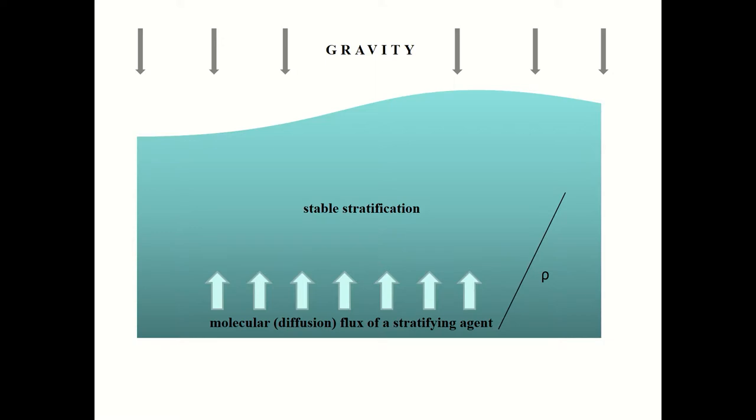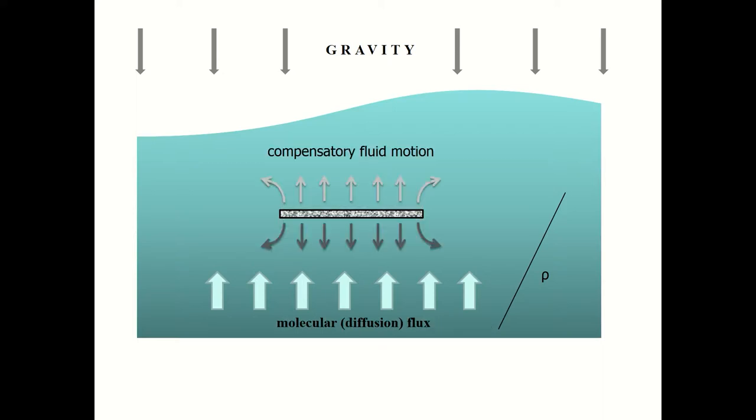In this fluid, molecular diffusion flux exists which is directed in this particular case from down to up in the direction opposite to gravity force action. If we set an impermeable obstacle in such a fluid, it breaks the molecular diffusion flux, that leads to formation of concentration excess and deficiency of a stratifying agent and formation of compensatory fluid motions which are called diffusion induced flows.